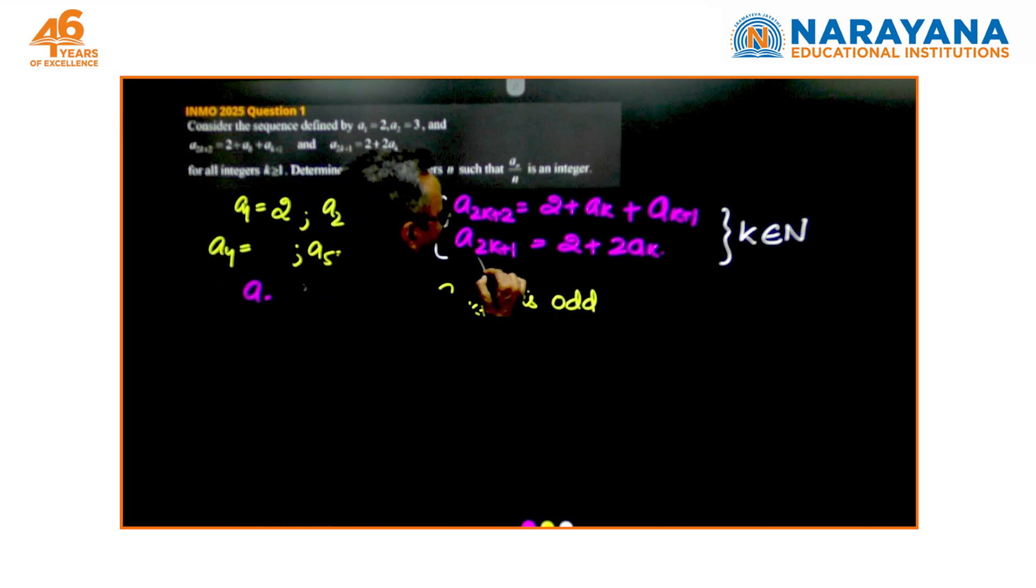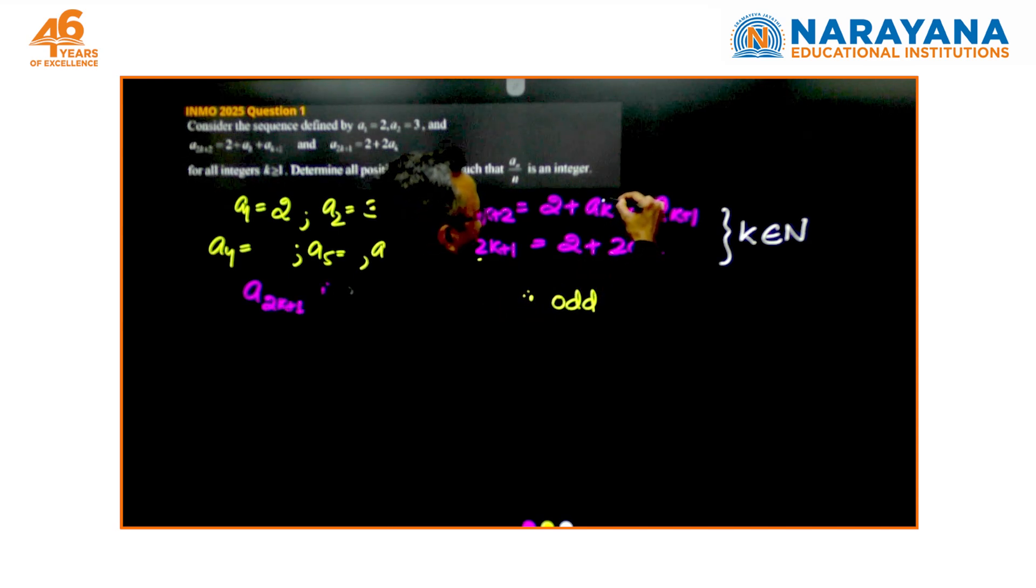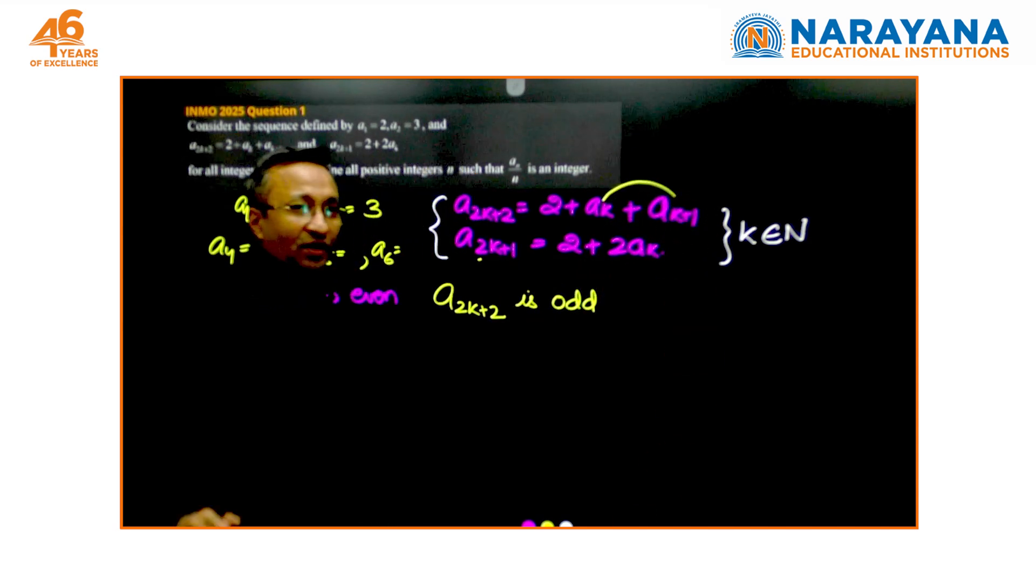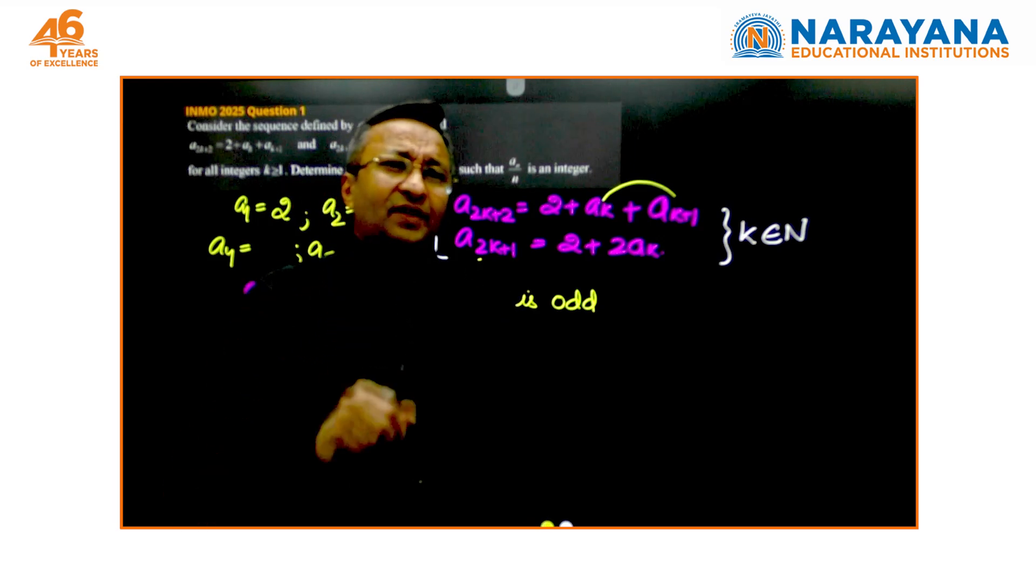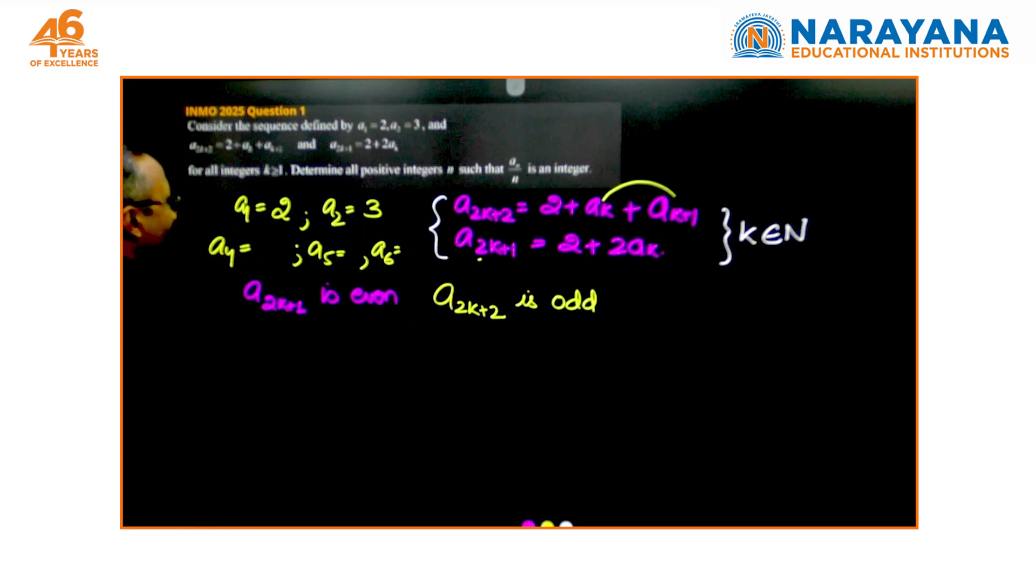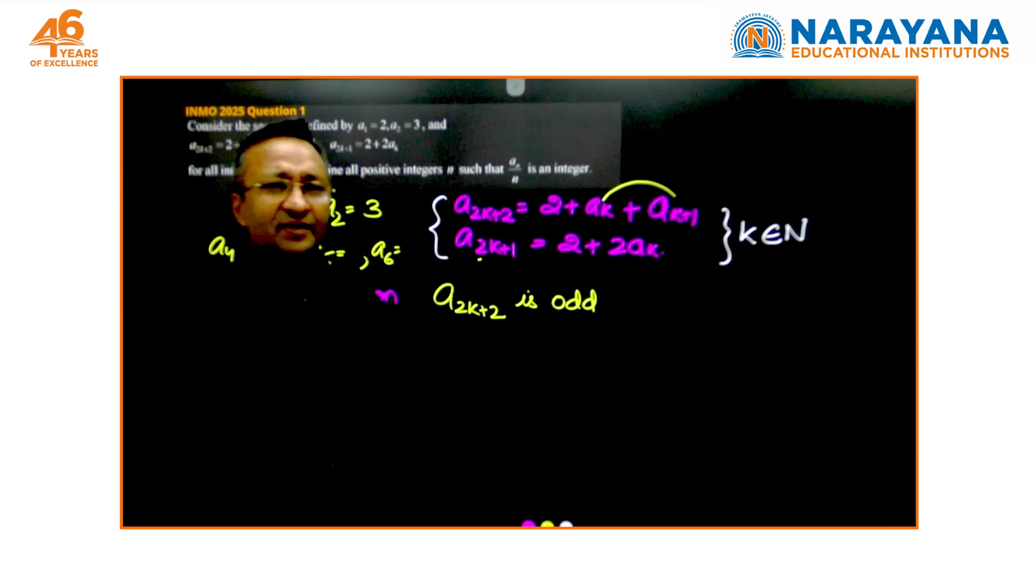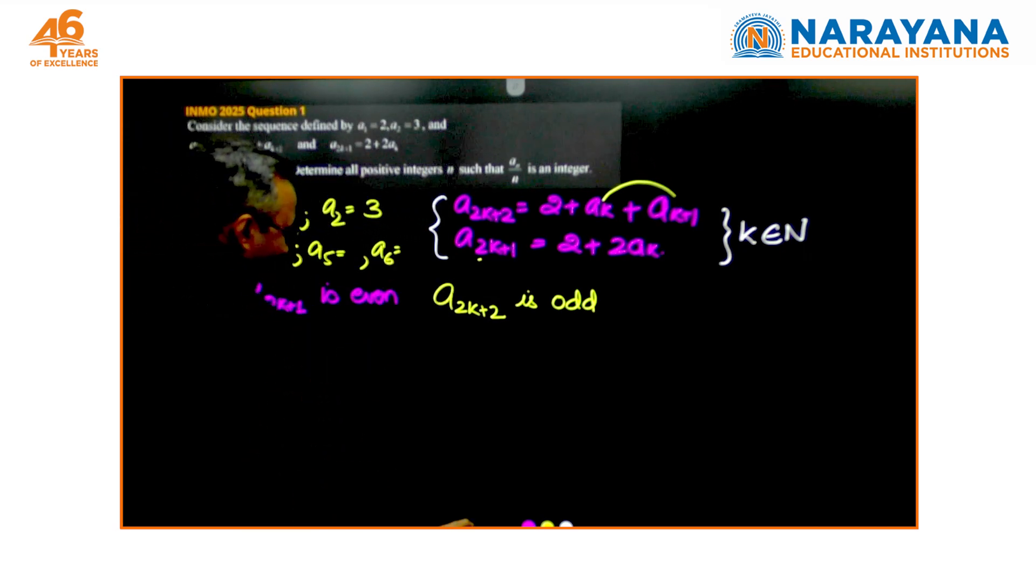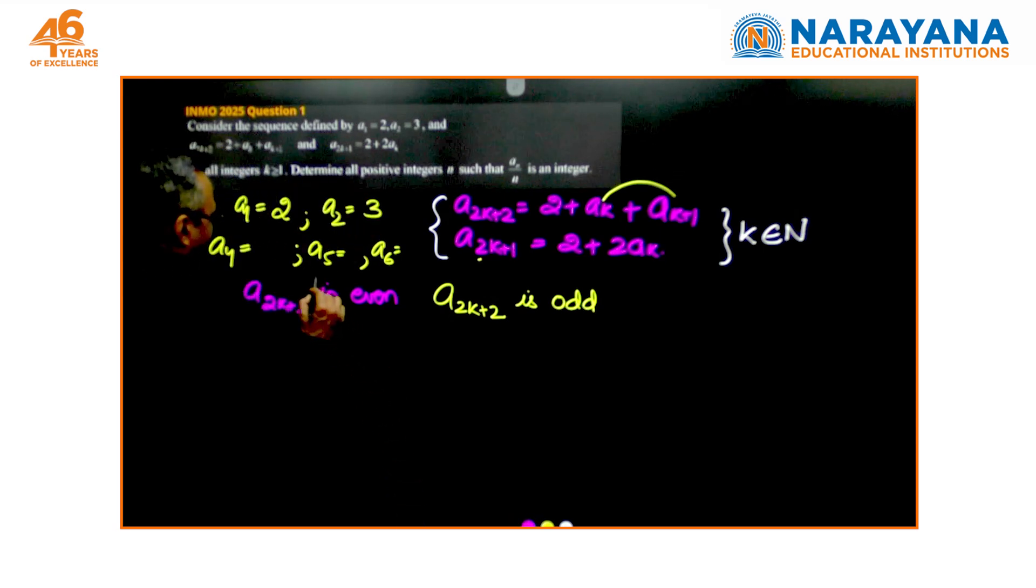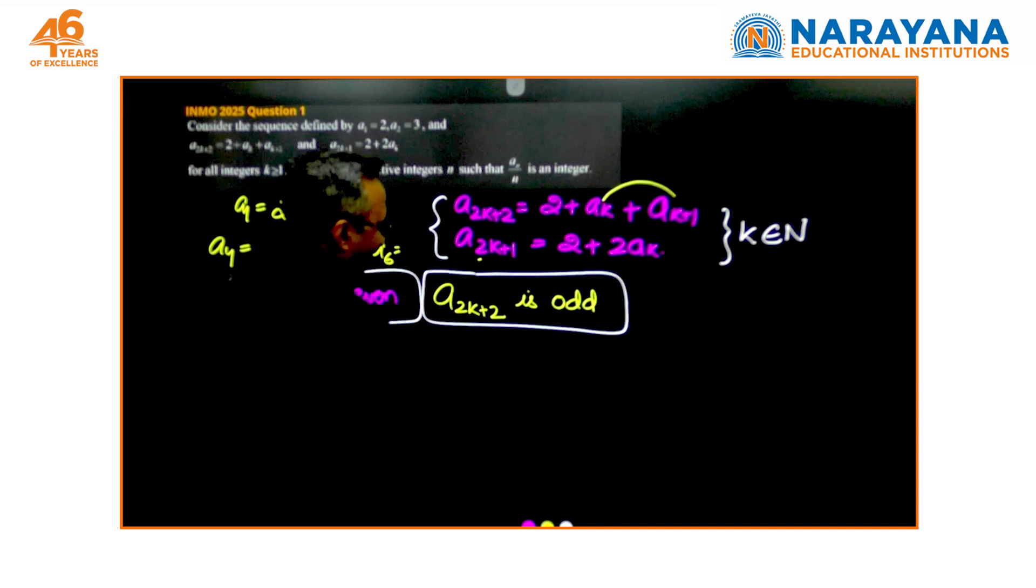Because when 2k+1 is even, two consecutive terms ak+1 and ak, one of them has to be even and we see here in the trend that each alternate is even odd, even odd. We realize that one of them is even and the other one is odd. Now, how do we get any idea of what has to be done?